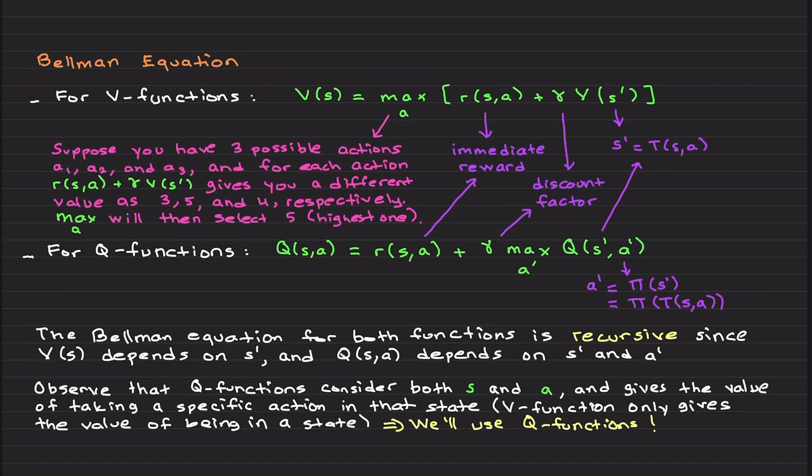So I can write it as V(T(s,a)). Let's discuss what this does. So suppose you have three possible actions a1, a2, and a3, and for each action, this inside function gives you a different value.